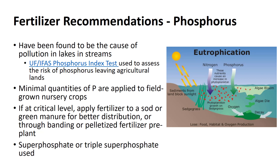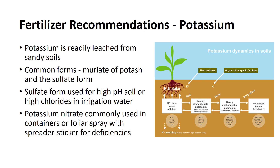This practice ensures better distribution of the phosphorus throughout the soil. Either superphosphate or triple superphosphate can be used effectively. Potassium cations on the surface of the exchange complex are available for plant growth. Potassium is readily leached from sandy soils. The two common forms of potassium fertilizers are the chloride form or the sulfate form. Muriate of potash is the least expensive and is the most commonly used form. Sulfate form contains 48% K2O and is used on crops sensitive to chlorides, where high levels of chlorides are present in irrigation water or on soils having a high pH. Potassium nitrate, which contains 44% K2O and about 13% nitrate, has a medium salt index per unit. This material is used extensively in fertilizing container-grown plants. It can be used as a foliar spray applied with a spreader sticker as a way to correct potassium deficiency on a nursery crop.